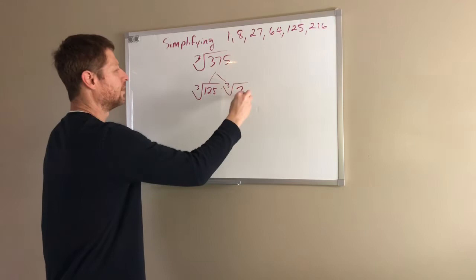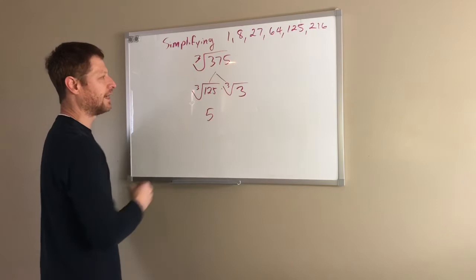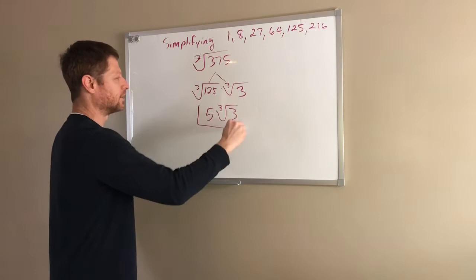The cube root of 125 is 5. We cannot take the cube root of 3, so that is our leftovers, and so our final answer would be 5 cube roots of 3.